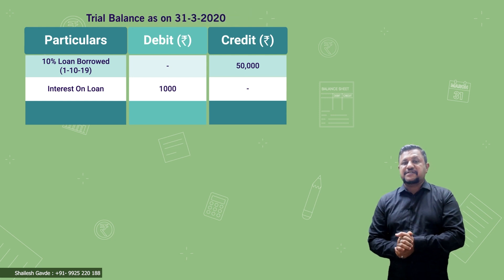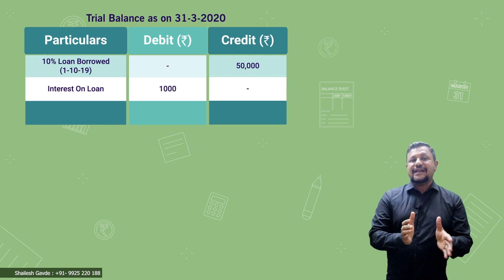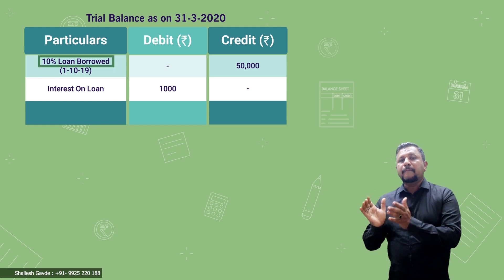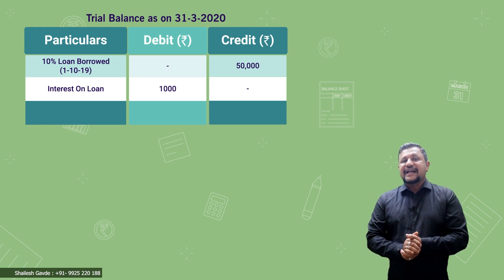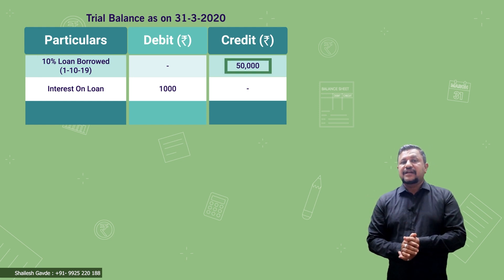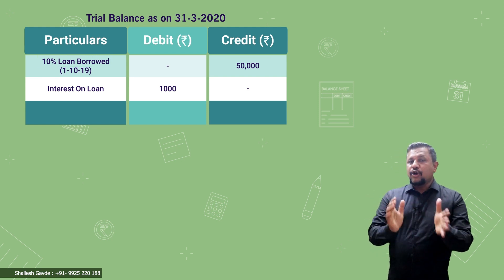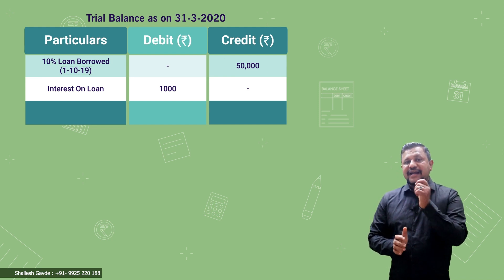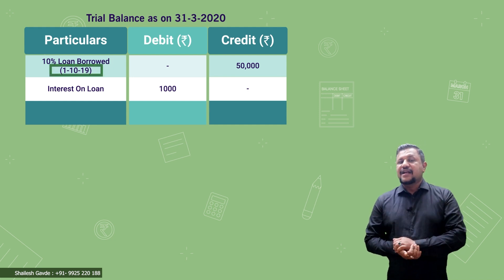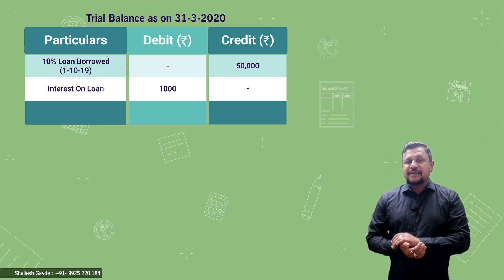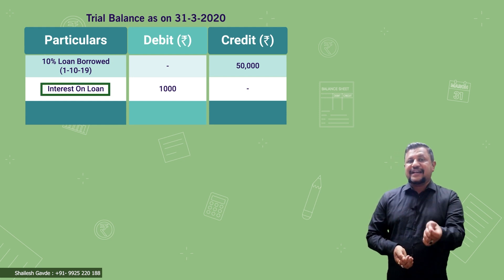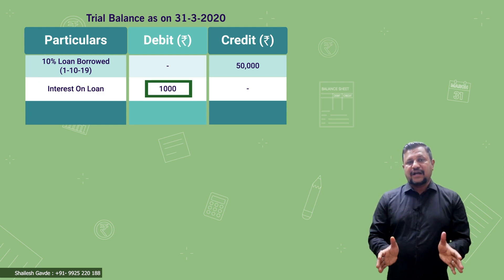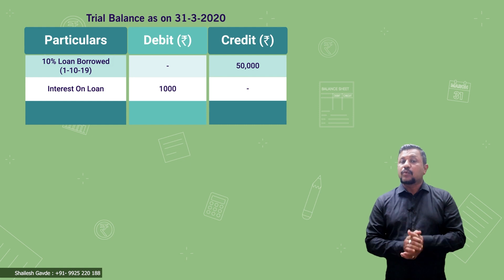In the trial balance as on 31st March 2020, they have given '10 percent loan borrowed' on the credit side: 50,000. Below this loan they have given the date 1/10/19. The next item given in the trial balance is 'interest on loan' on the debit side: 1,000.